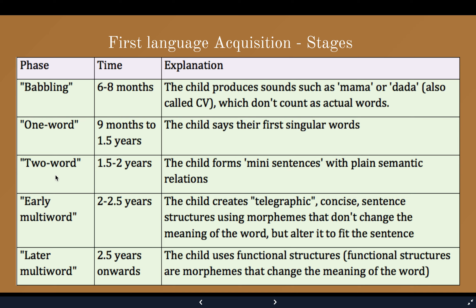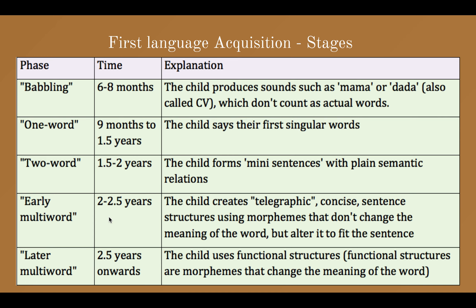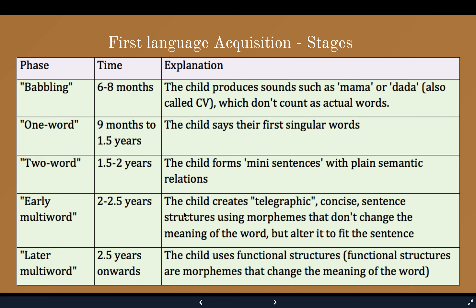Then comes the two-word stage, from one and a half to two years. At this stage they are saying a mini sentence — that is a mini sentence. Then, the early multi-word stage, from 2 to 2.5 years, where they are using mini sentences. This is normal first language acquisition.